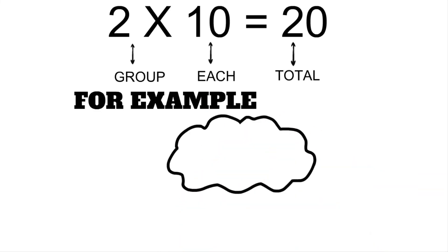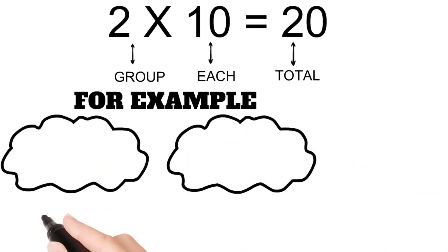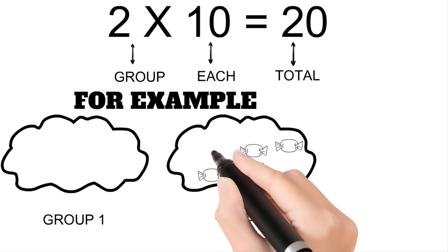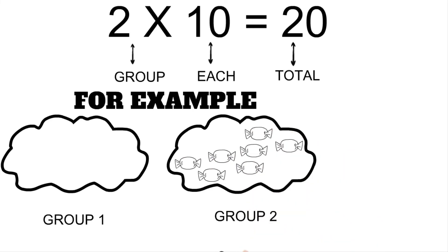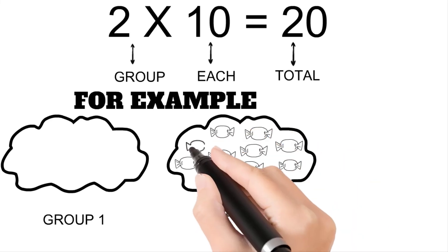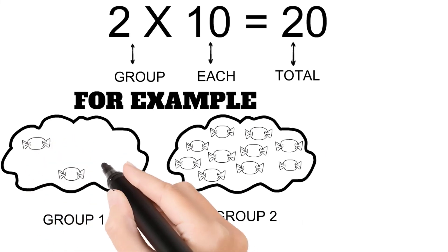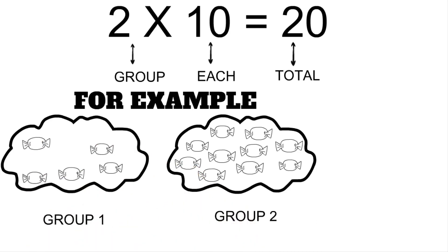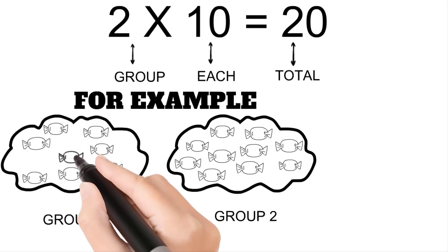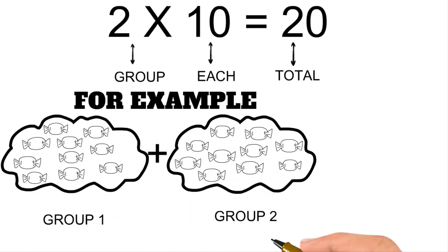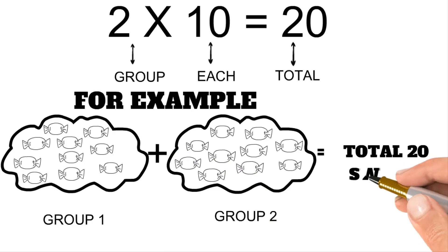For example, we have two groups — group one and group two. Each group has ten sweets. Group one also has ten sweets. When we add these two groups together, we will get a total of twenty sweets.